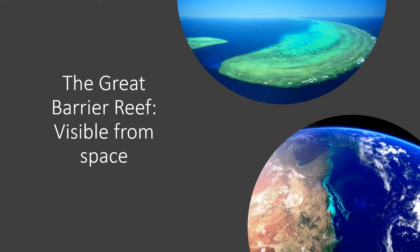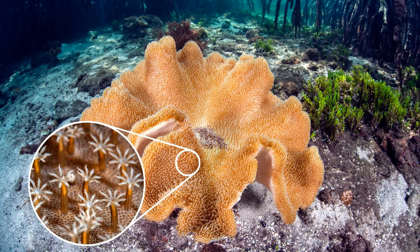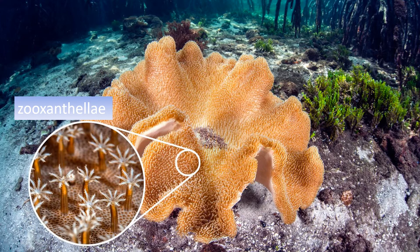Coral also has a mutualistic relationship with the type of algae that grows on it. This algae, called zooxanthellae, benefits from a protected habitat within the coral in the shallow water where it can photosynthesize. Coral also benefits because the algae produces oxygen and carbohydrates for the coral's use. This is just one simple example of the many relationships and interconnected food webs that exist in a coral reef.